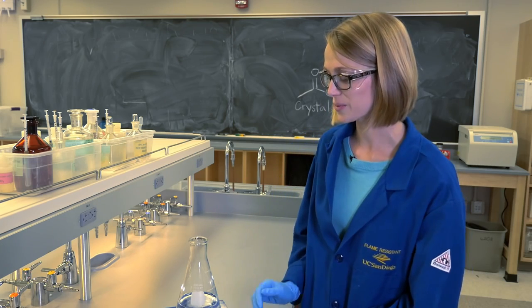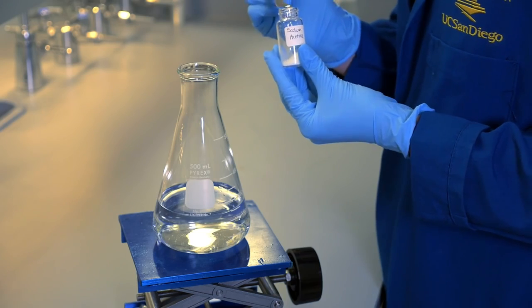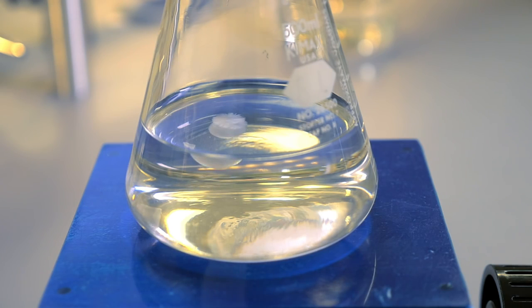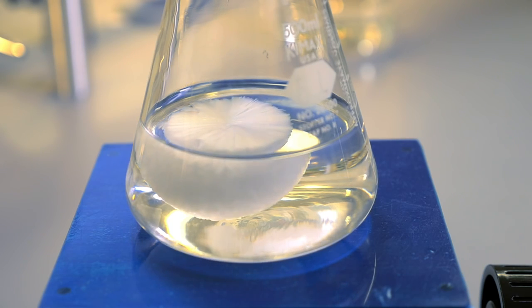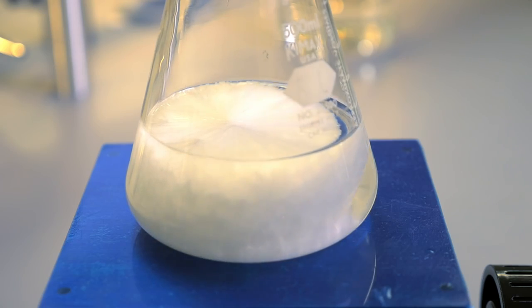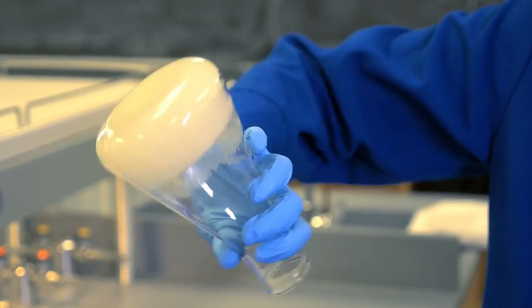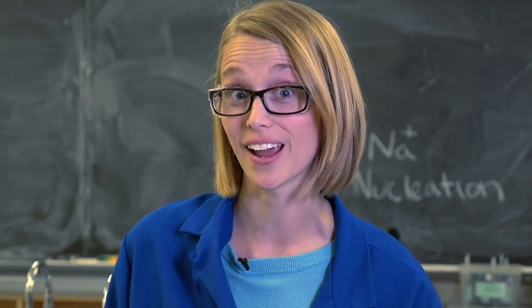Let's look at another example using chemistry. In this flask, we've dissolved a compound called sodium acetate. You can't see the individual molecules because they are spread out in solution. But let's see what happens when we add a tiny crystal. The crystal acts as a nucleation site for the dissolved molecules to gather on and come out of solution to form a solid. This is very similar to what happens in clouds when water vapor from the atmosphere comes out of the gas phase to form a liquid droplet on the aerosol particle.